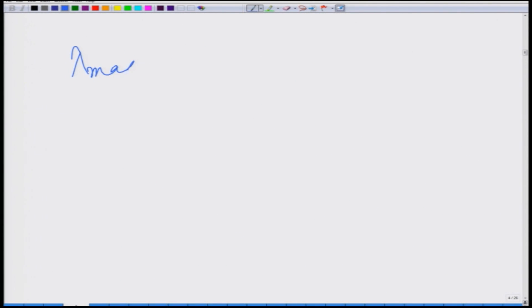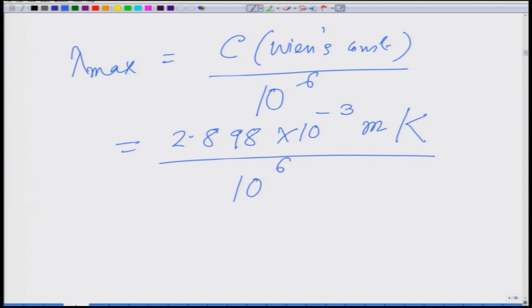Lambda max is the constant which is the Wien's constant divided by given temperature 10 to the power 6 and this constant value is 2.898 times 10 to the power minus 3 and I have 10 to the power 6 Kelvin. When I divide I get 2.898 into 10 to the power minus 9 meter and we have already seen that 1 meter is 10 to the power 10 Angstrom.